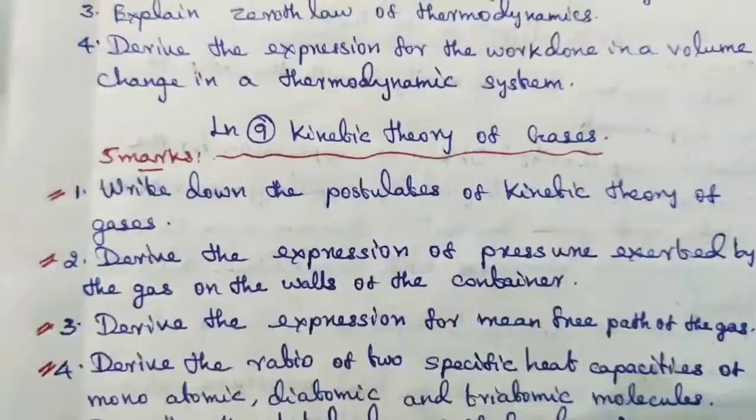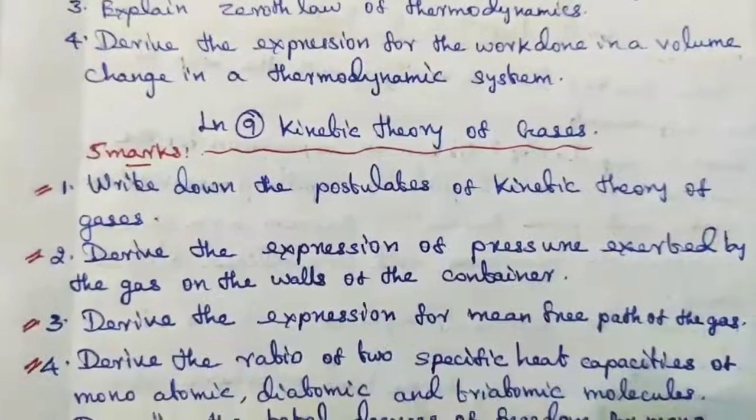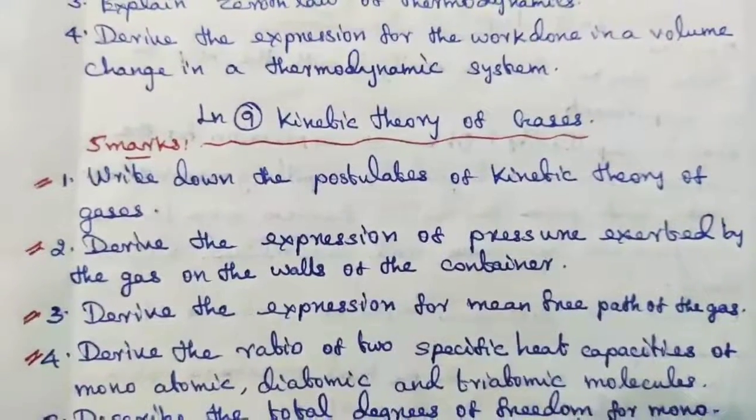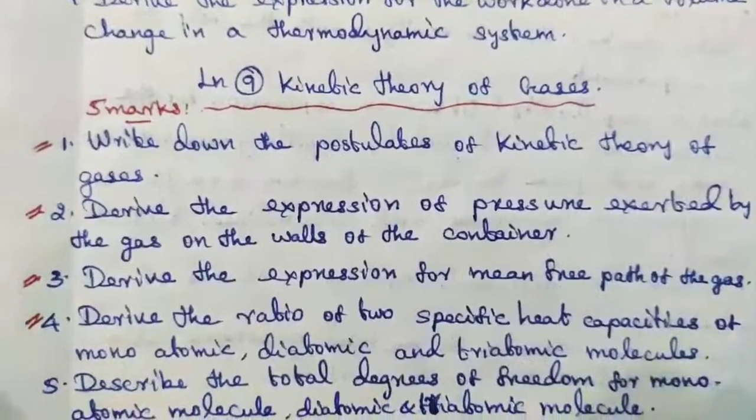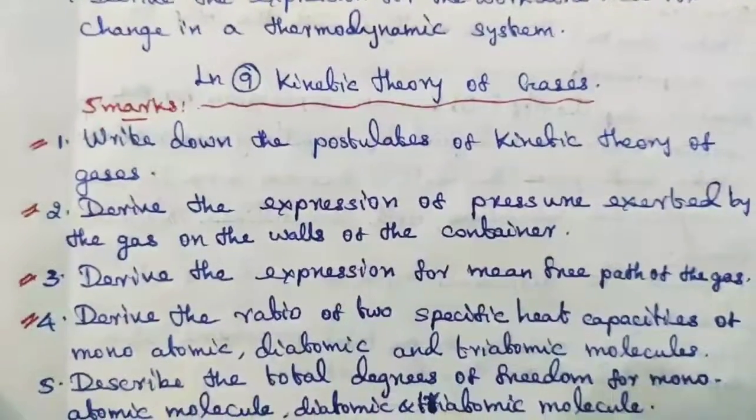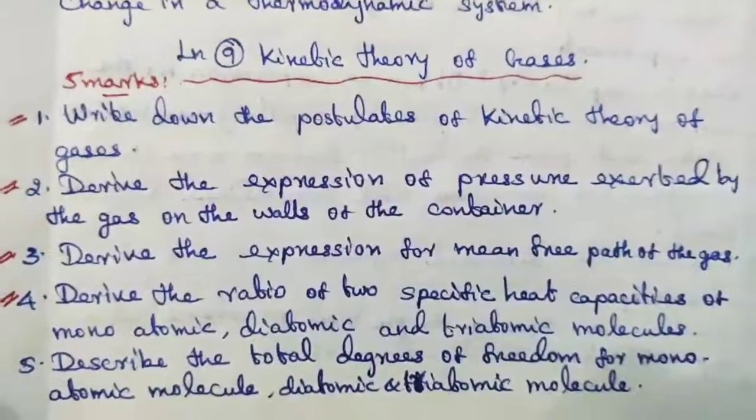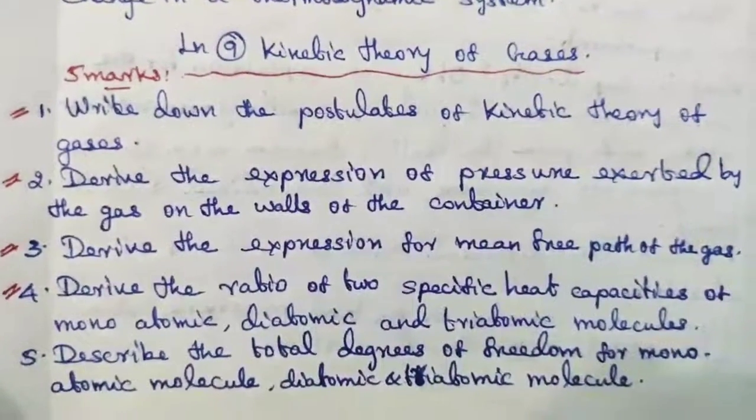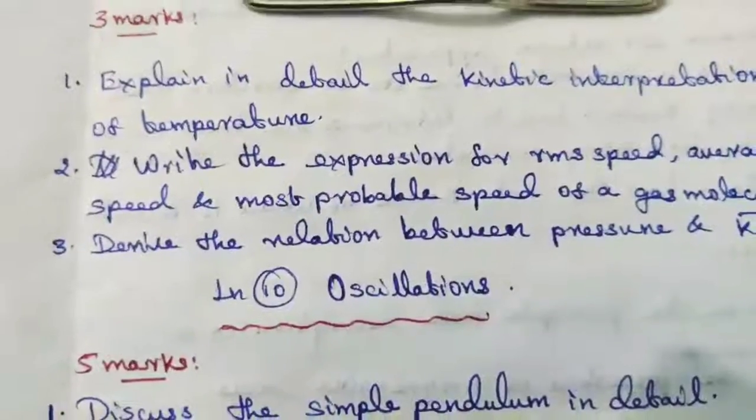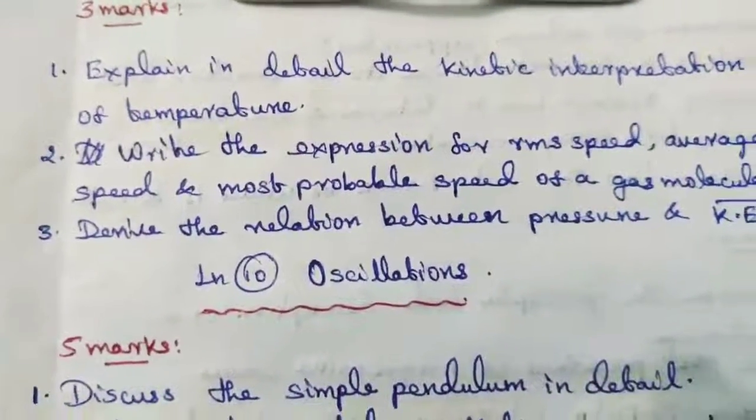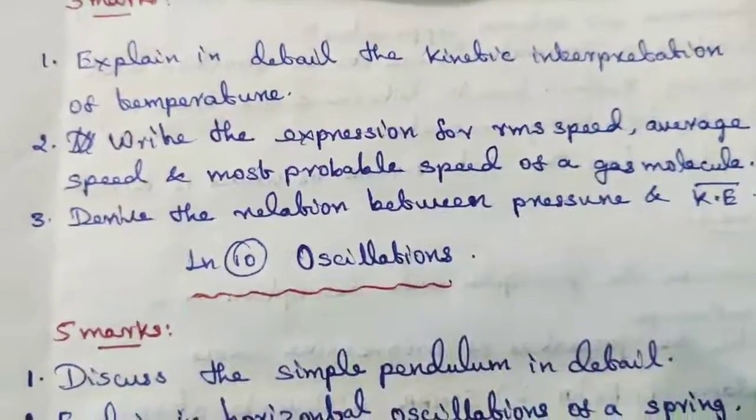Derive the ratio of two specific heat capacities of monoatomic, diatomic and triatomic molecules. Describe the total degrees of freedom for monoatomic molecule. Explain in detail the kinetic interpretation of temperature.